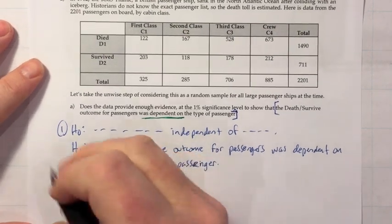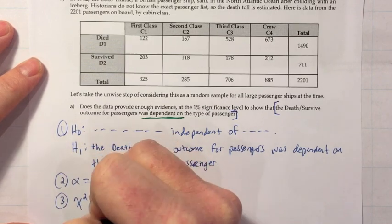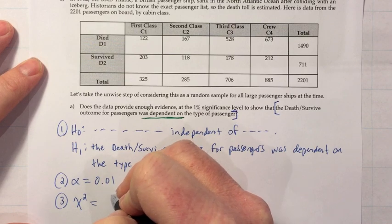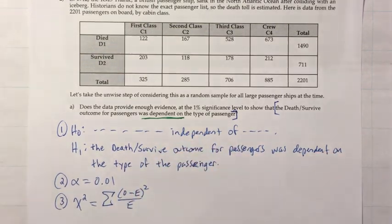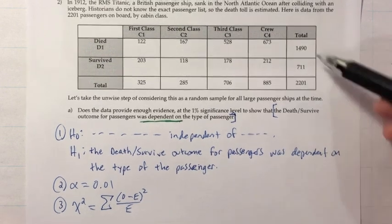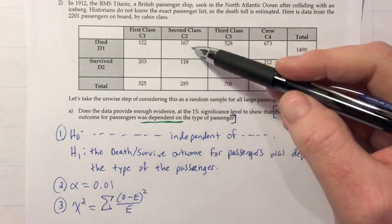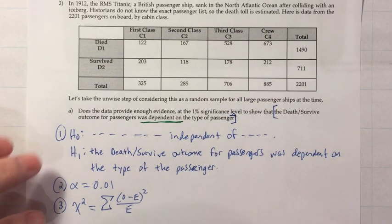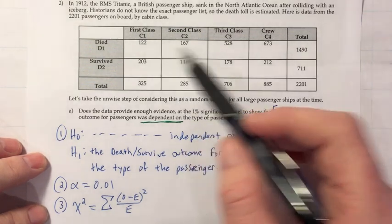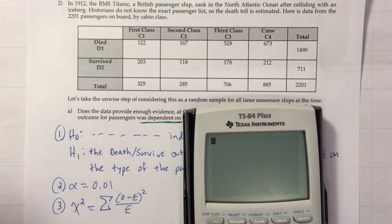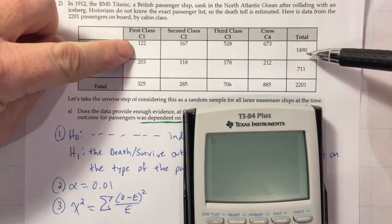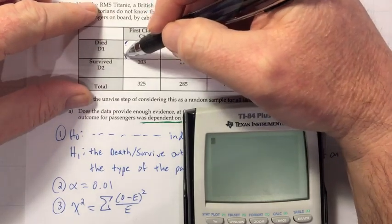Now we want the chi-squared test statistic — same formula as the goodness-of-fit: the sum of (O minus E) squared over E, or mini z-scores. We want a mini z-score for every cell that cross-classifies these variables — not the totals, but the interior cells. That's eight cells: one, two, three, four, five, six, seven, eight. So we need eight mini z-scores. The expected frequency formula is: row total times column total divided by grand total.